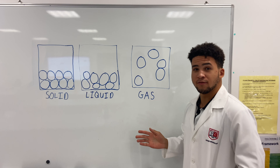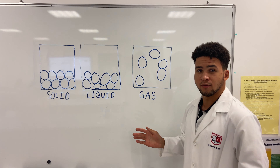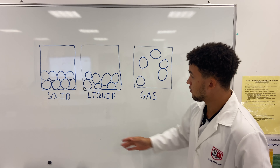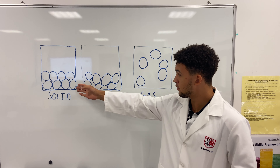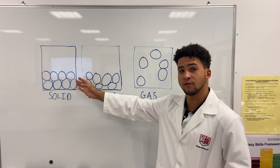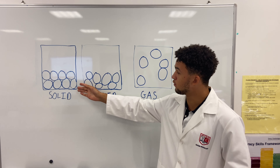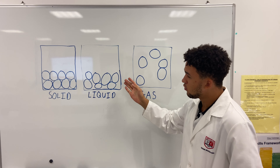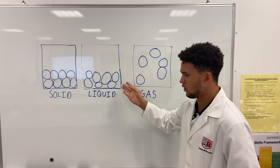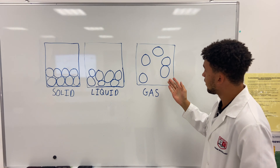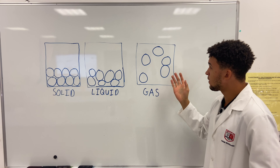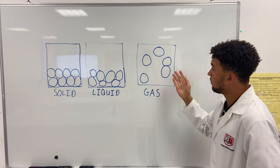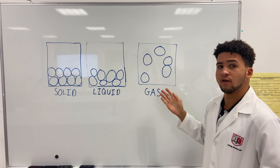Here you can see the different states of matter in diagrams. As you can see, the solid is regularly arranged and all the particles are touching. The liquid has all particles touching but not so regularly arranged. The gas expands to fill the container and most of the particles aren't touching.